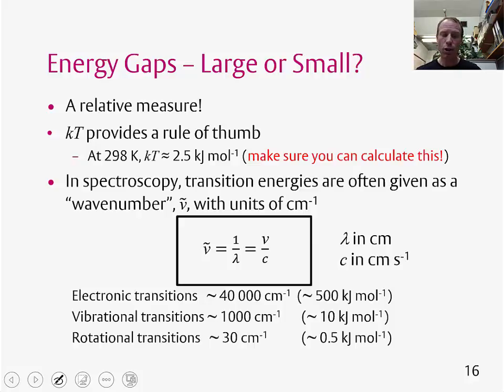If we now look back at KT, we can see that rotational transitions are typically smaller than KT, whereas vibrational transitions are typically larger than KT. And this gives us already some information about how many transitions we expect to see in a spectrum at room temperature. We'll come back to this as we address each of these types of spectroscopy in turn.